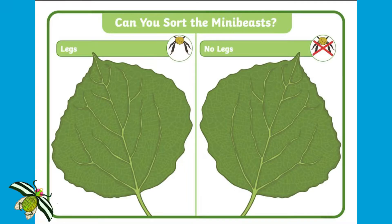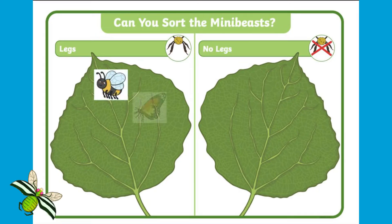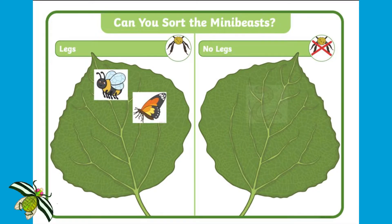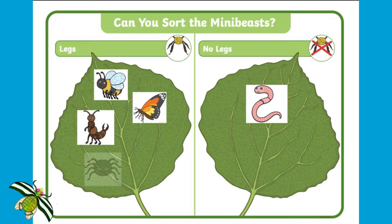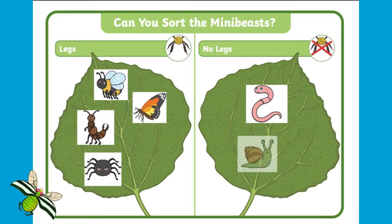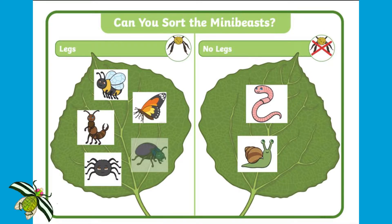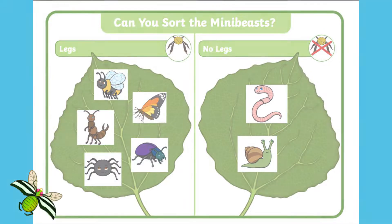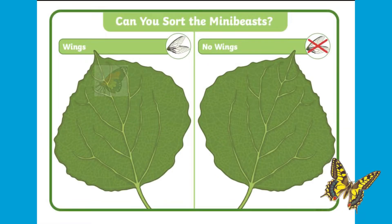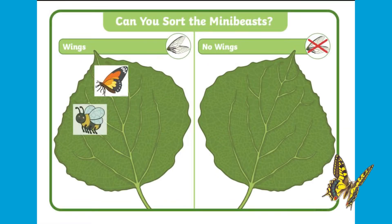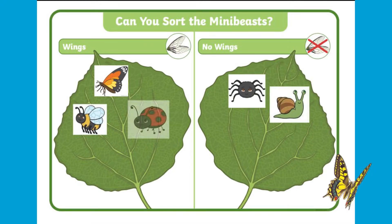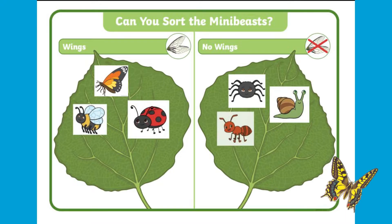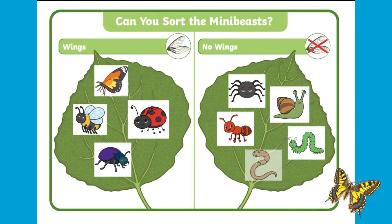Children can then carefully cut out each mini-beast and sort them into different categories. For example, which mini-beasts have legs and don't have legs? Or can children sort the mini-beasts into groups based on whether they have wings or don't have wings?